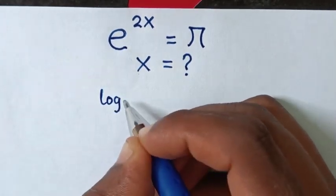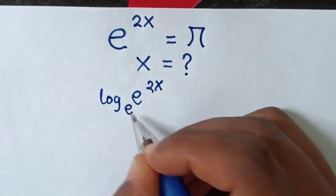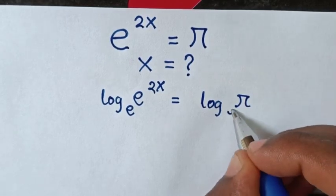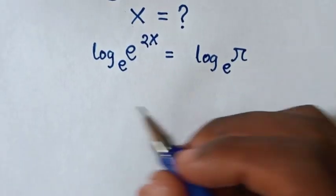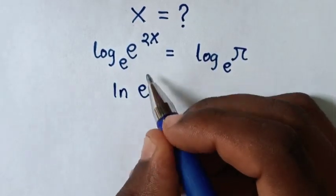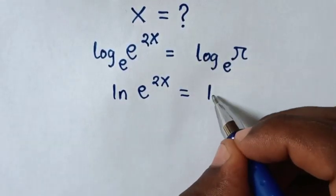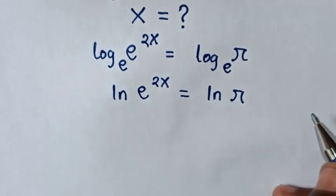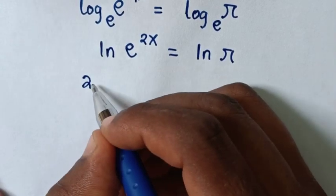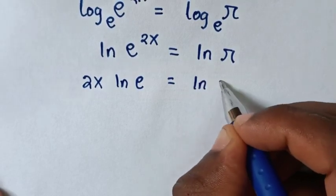Therefore our equation will be log of e to the power of 2x, base e, is equal to log of pi base e. Then log base e is the same as ln, so it will be ln of e to the power of 2x is equal to ln of pi. Then this power of 2x will move to the front, so it will be 2x times ln(e) is equal to ln(pi).